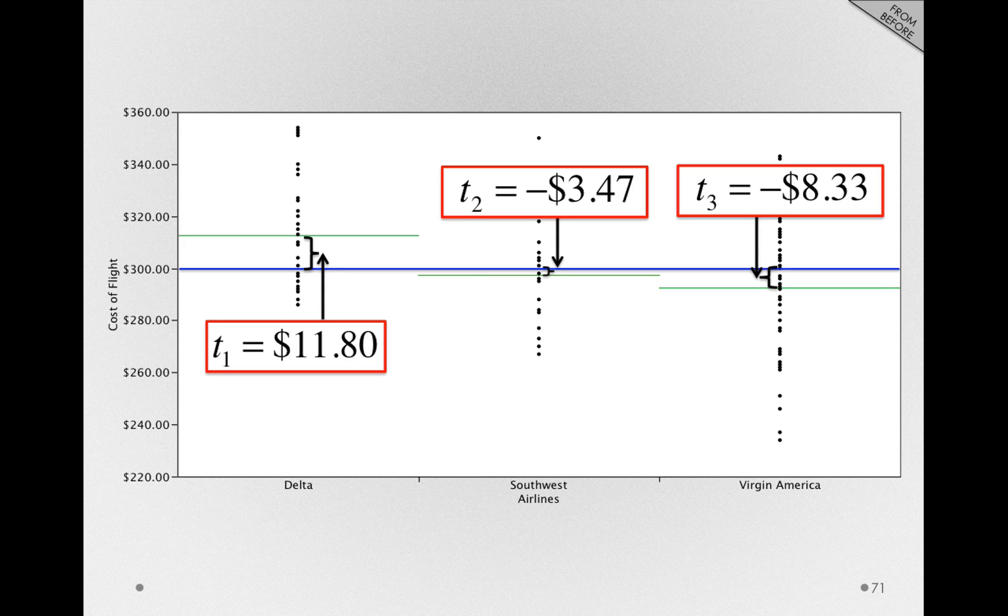What that means is, if I were to tell you two of these treatment offsets, you could calculate the third without knowing anything else. Think about this: if I were to tell you t_1 is 11.80, and t_2 is negative 3.47, and you knew that there was a t_3, and that the sum of all the t's had to be zero, it's just some simple arithmetic to find that t_3 is equal to negative 8.33.